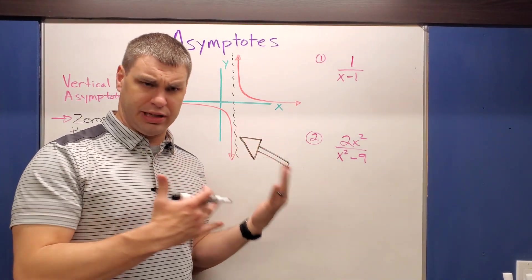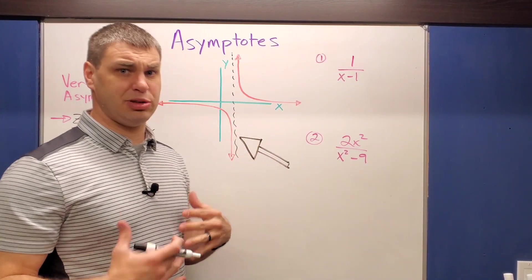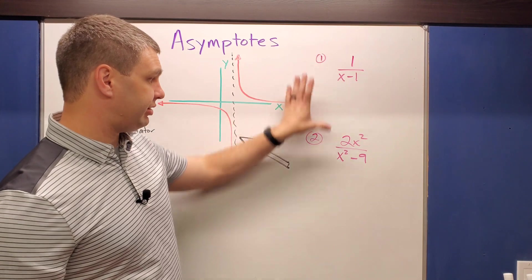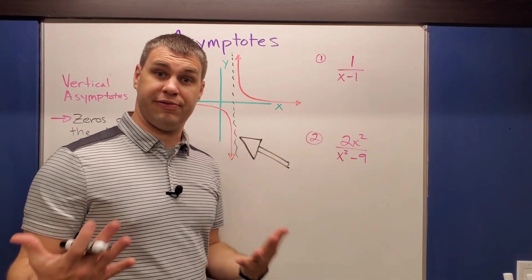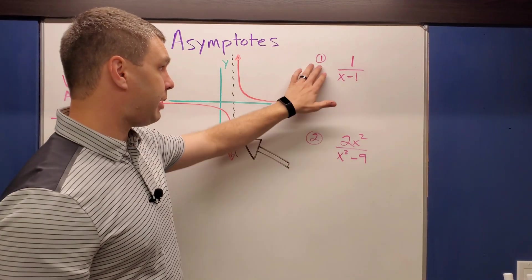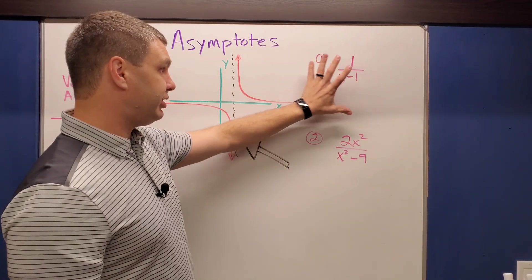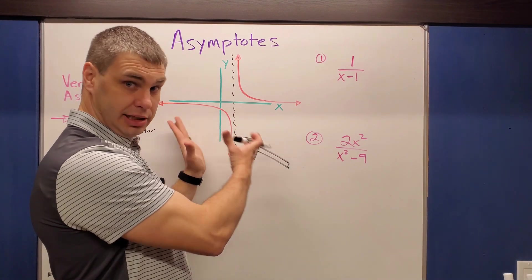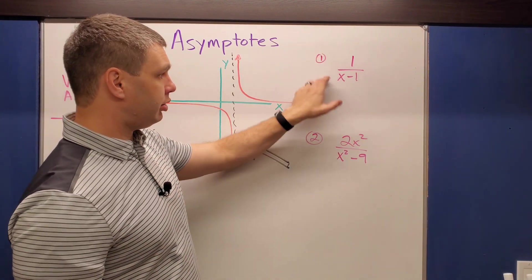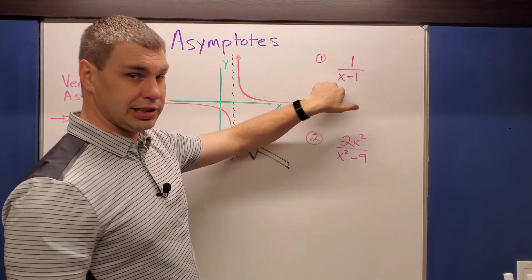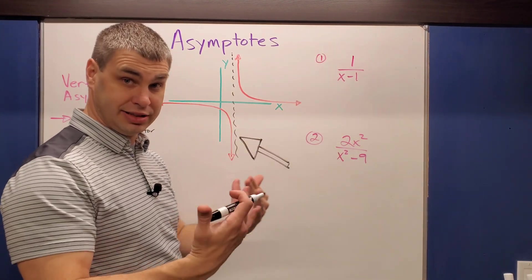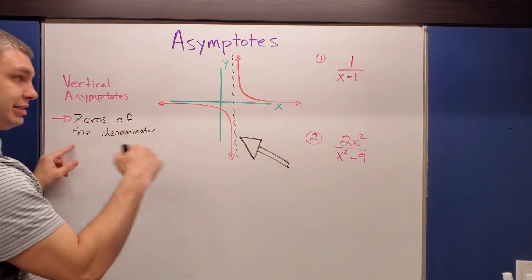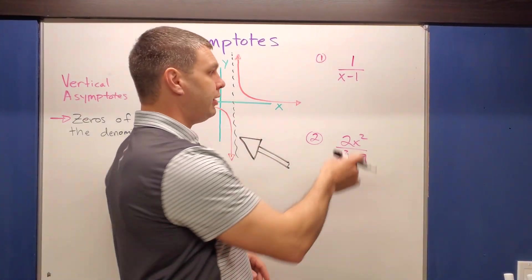The definition of a vertical asymptote is the zeros of our denominator. Since we have numerators and denominators, we're going to have rational expressions like in examples one and two. The top one corresponds to the graph shown — it's one over x minus one. To find the vertical asymptote, we find the zeros of the denominator.